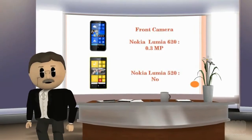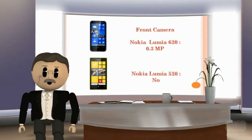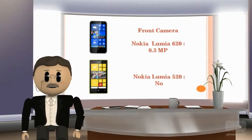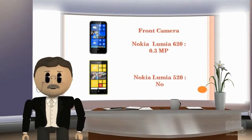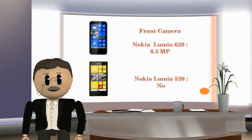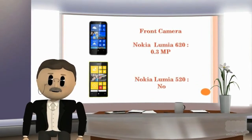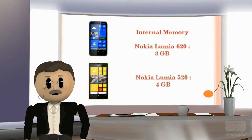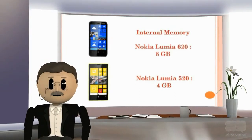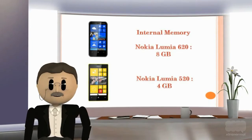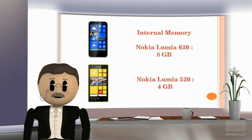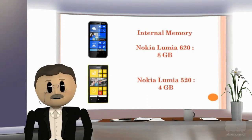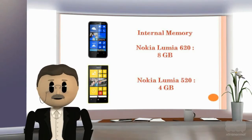Front camera of Nokia Lumia 620 is 0.3 MP, and there is no front-facing camera in Nokia Lumia 520. Internal memory of Nokia Lumia 620 is 8 GB and internal memory of Nokia Lumia 520 is 4 GB.